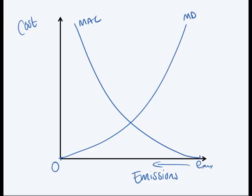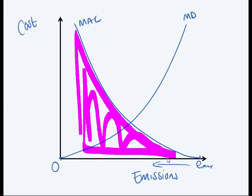And the area under this curve, over here, this whole area under this curve, ignoring the marginal damage function, this shows me the total abatement cost.